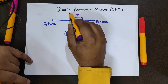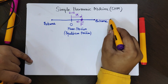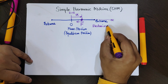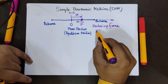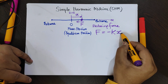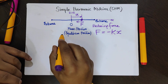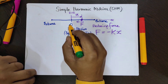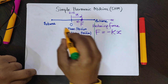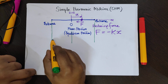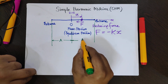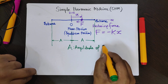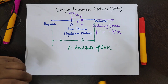For example, if we consider x equal to 0 here and this is the positive direction of the x-axis, then we can write the restoring force F equal to minus kx, where k is the proportionality constant. This distance from extreme to mean position is known as the amplitude A of the SHM.